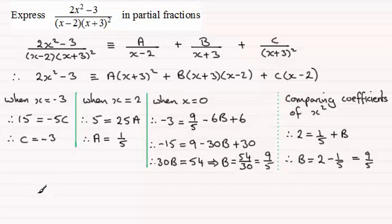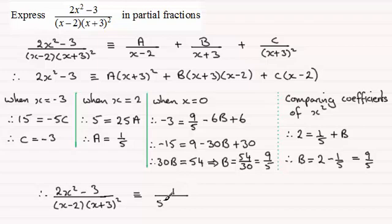So in summary then, what we've got is therefore 2x squared minus 3, all divided by x minus 2, times x plus 3 all squared. Well that's going to be identical then to A over x minus 2. A is a positive value, so we can just write that in first of all, 1 over 5 times x minus 2. And then we've got B over x plus 3, B we've just seen is 9 fifths, so that's plus 9 over 5 times x plus 3.